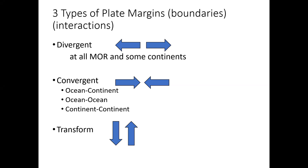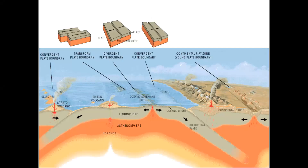There are two or three types of plate boundaries or plate interactions, and today I'm going to be talking about divergent plate boundaries. You can see from the arrows that if plates are divergent, they are spreading away from each other. In subsequent lectures, I'll cover convergent plate boundaries and transform plate boundaries.